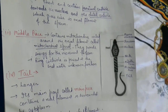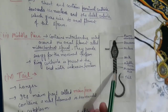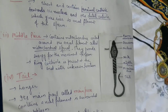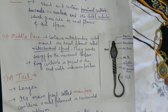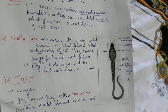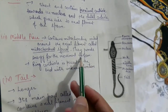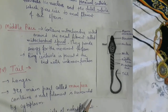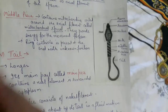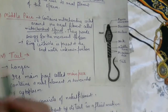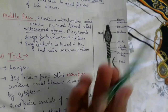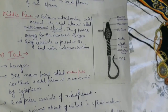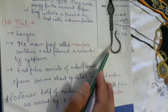The third part is the middle piece. The middle piece contains mitochondria arranged in a coiled form around the axial filament. As we know from Class 11, mitochondria are the powerhouse of the cell — they provide energy. So the mitochondria in the middle piece provide energy to the sperm so that it can move. There is also a ring centriole present at the end of the middle piece, at the junction where the middle piece ends, though its function is still largely unknown.